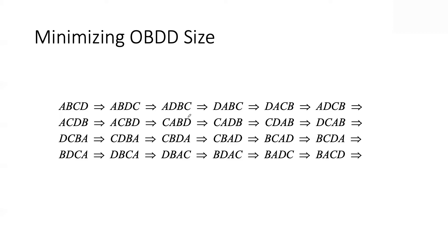If you have an OBDD according to some variable order and you want to swap two adjacent variables, that can be done efficiently — and that ends up being the primitive operation for dynamic variable ordering. By repeatedly swapping adjacent variables you can navigate through all possible variable orders. There are many different search strategies for how to navigate this space to minimize the OBDD size, but the basic primitive is swapping two adjacent variables efficiently on an OBDD.